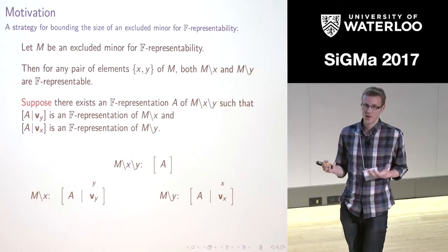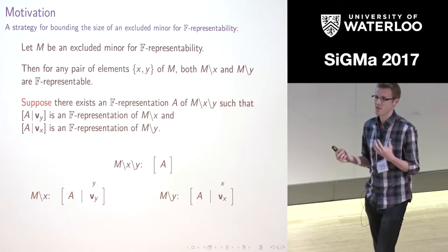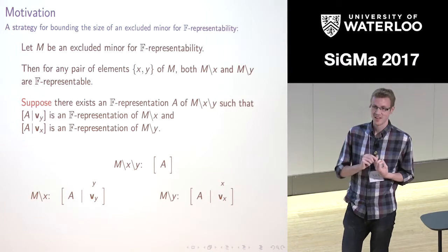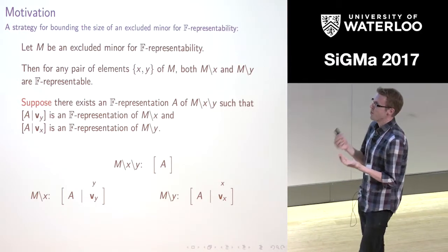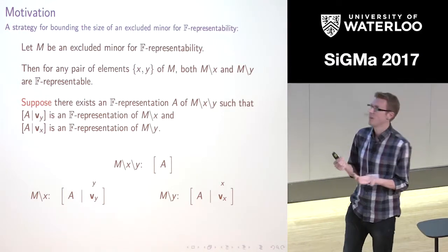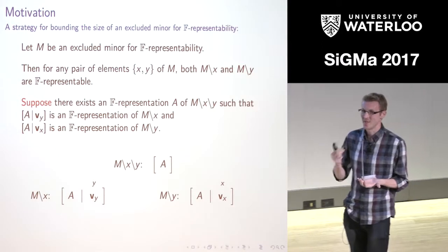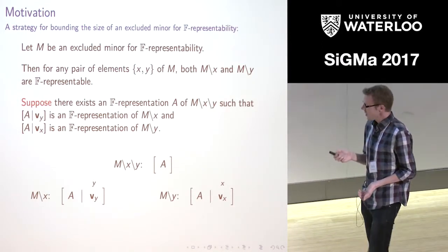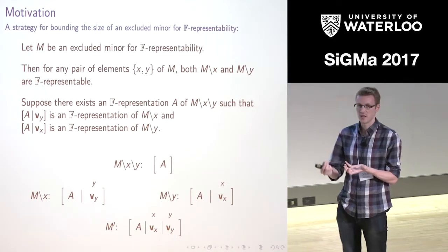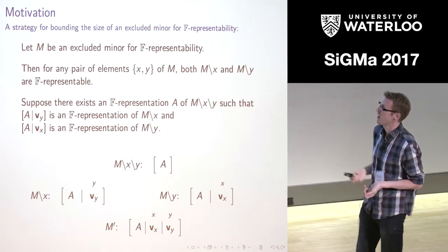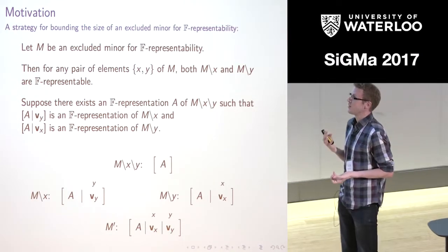Suppose that you can find some nice representations that, in a sense, overlay. More specifically, you can find a representation for M delete X, delete Y — call this A. We can add in a column corresponding to element Y to get M delete X, or add in a column corresponding to element X to get M delete Y. Then we take this representation starting with A, append the vector corresponding to X and the vector corresponding to Y, and get a representation for a matroid that behaves a lot like M — sometimes called a companion matrix.